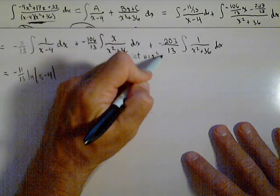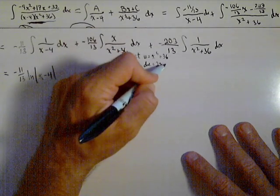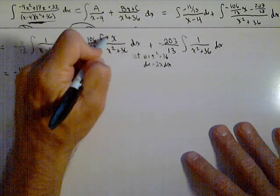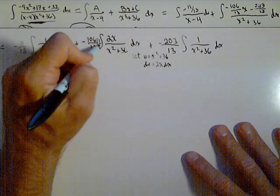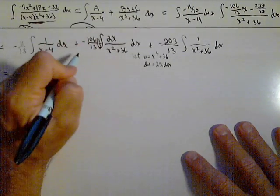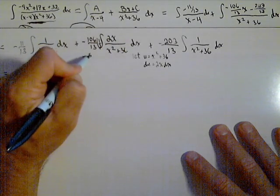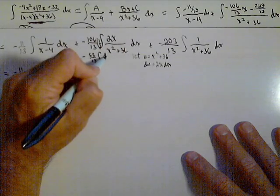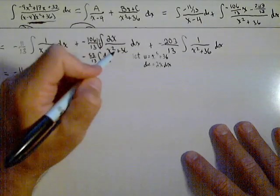So dU is just 2x dx. So if I put a 2x in here, I will multiply by a 1 half out here for my substitution. And that is gonna give me a negative 53 over 13 times the integral of dU over U which is just an ln of U.